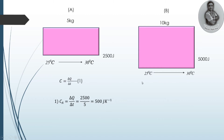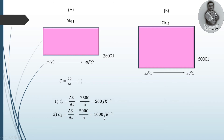For body B, C_B = ΔQ / ΔT = 5000 / 5 = 1000 joule per Kelvin. So 1000 joule per Kelvin is the heat capacity of body B.